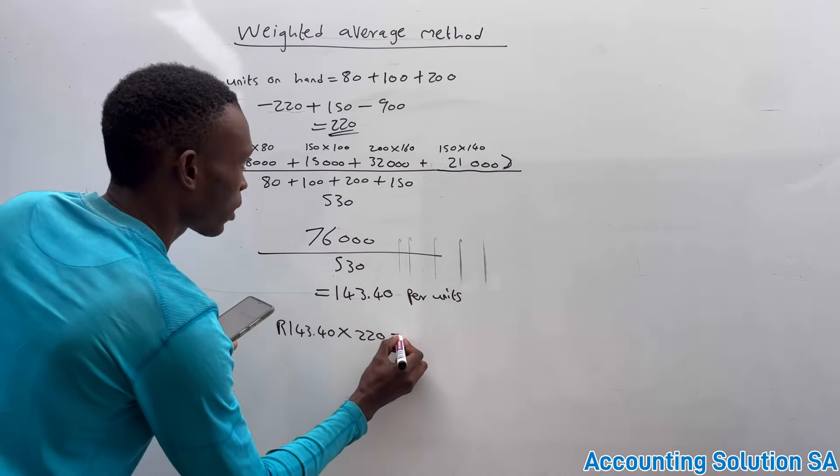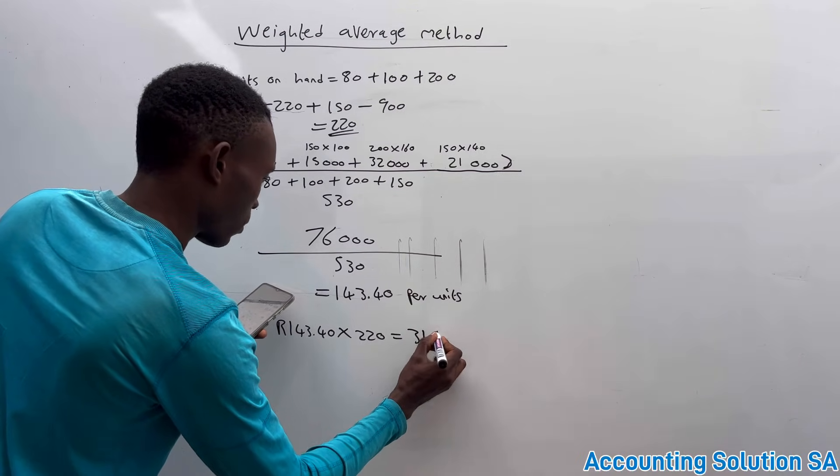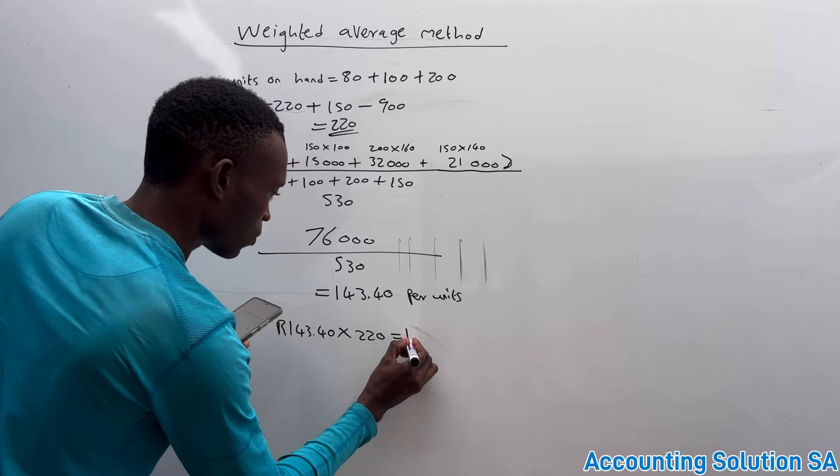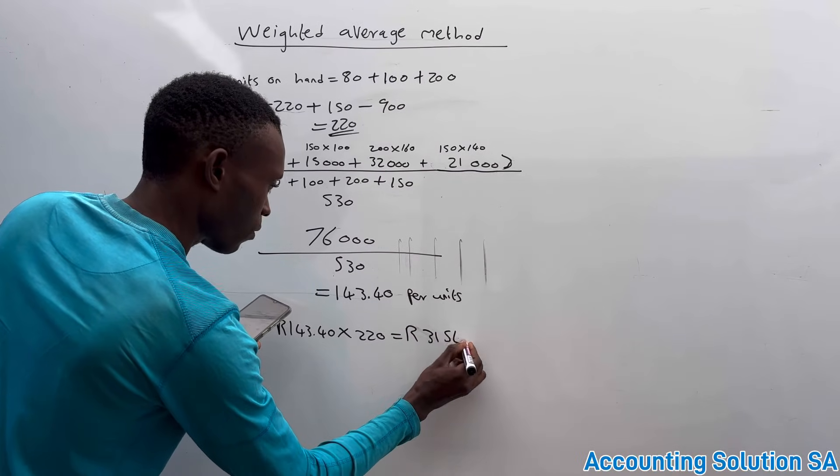Then you're gonna get an amount of 31,548. That's how you should calculate average.